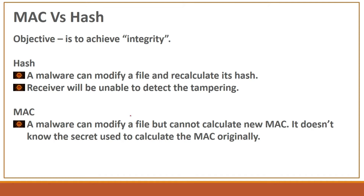Using a hash, a malware can modify a file and recalculate its hash, because it does not require any key — just a known algorithm. Both the sender and receiver can calculate the hash. For example, if the sender is sending a message and calculates the hash, there is no guarantee that if the message is tampered and the hash is recalculated, the receiver will be able to detect that the message has been tampered.